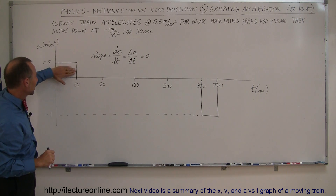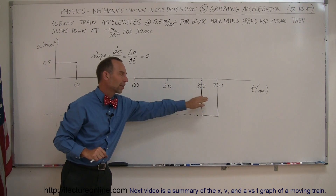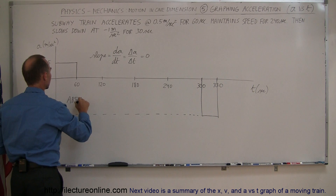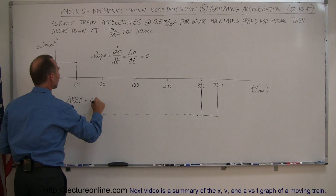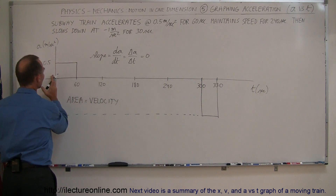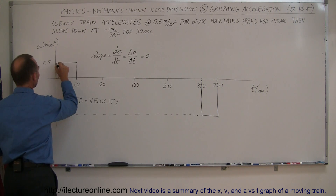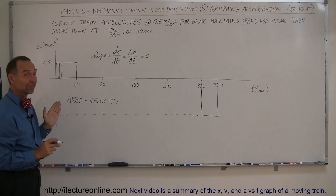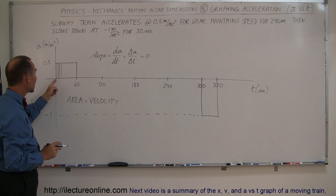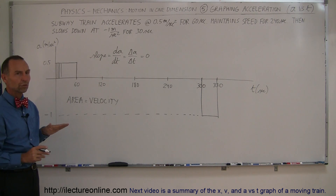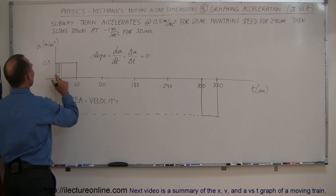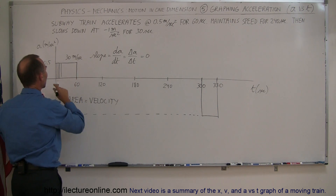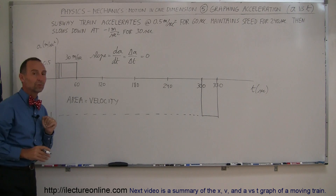What about the area underneath the curve? We have an area here, zero area there, and some area there — and notice that this last area is negative. The area underneath the curve represents the velocity. Since the train is accelerating, as time goes by you have more and more area, meaning the velocity is increasing until you reach 60 seconds. The velocity obtained is equal to the area: 60 times 0.5, or 30 meters per second. So the train went from zero to 30 meters per second.